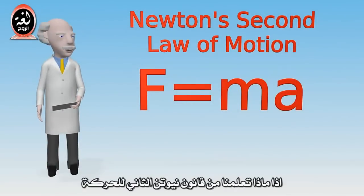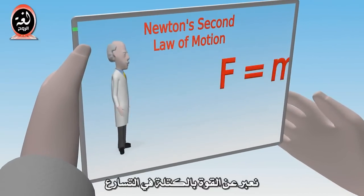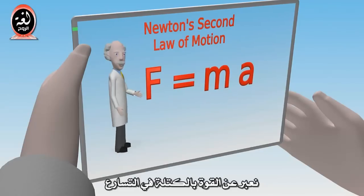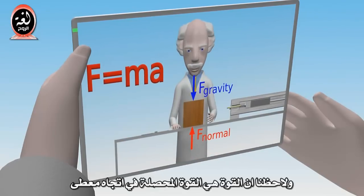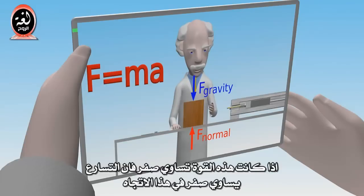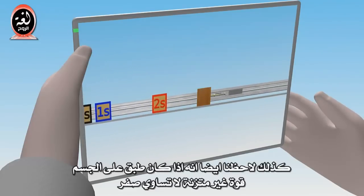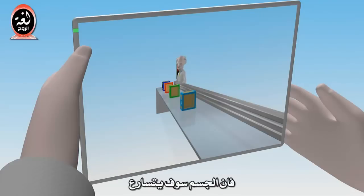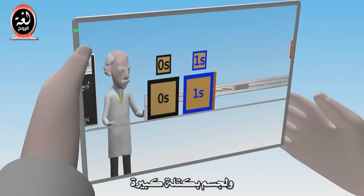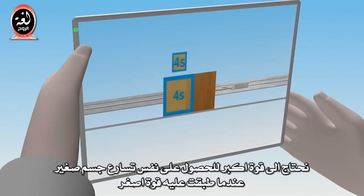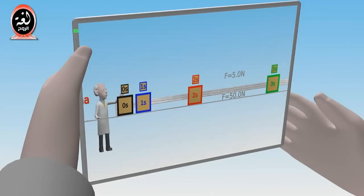Let's review what we've learned about Newton's second law of motion. The law is expressed as force equals mass times acceleration. The force is the sum of the forces on an object in a given direction — if this equals zero, then the acceleration of the object is zero. If we have a non-zero unbalanced force applied to the object, it will accelerate. The larger the force, the greater the acceleration. And for objects with larger mass, we need to apply a larger force to get the same acceleration as a smaller block with a smaller force applied.